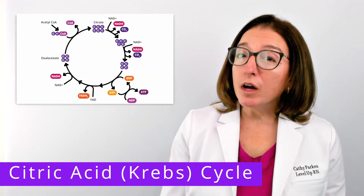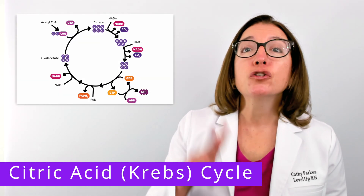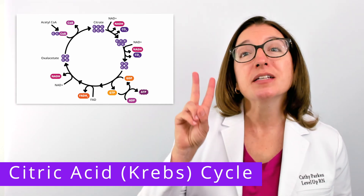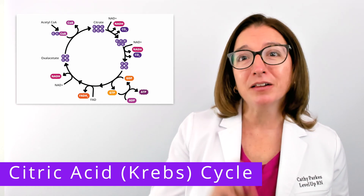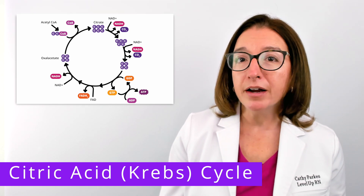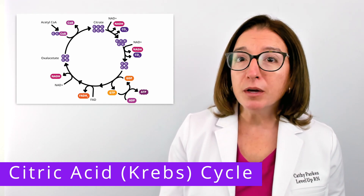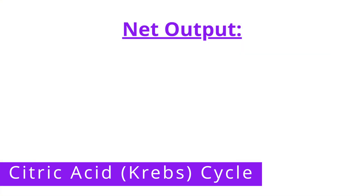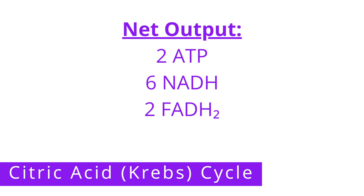Because one glucose molecule produces two pyruvate molecules which are converted into two acetyl-CoA molecules, two turns of the citric acid cycle are required to process all the carbon from one glucose molecule. So the net output after two cycles is two ATP, six NADH, two FADH2, and four carbon dioxide molecules.